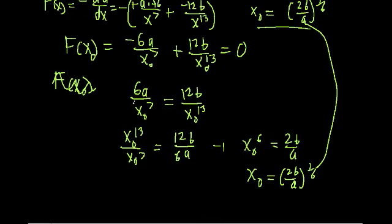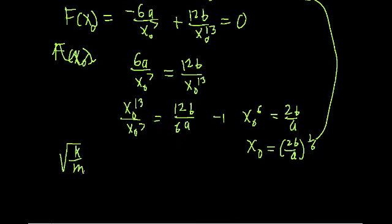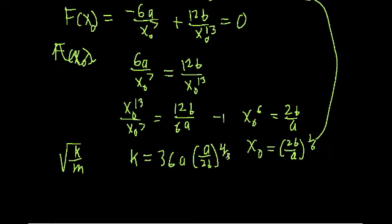That was the equilibrium position for when the net force is equal to zero. Now there's another part to this problem: we have to show that the system will oscillate with simple harmonic motion when slightly displaced from equilibrium, with a frequency given by √(K/m), using a reduced mass. We need to show that K equals 36A times (A/2B) to the 4/3. That looks a bit tricky, but let's take it step by step.